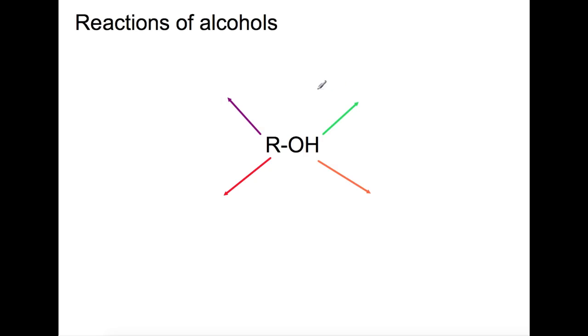Alcohols can be involved in lots of different reactions. One reaction that you will be used to is the oxidation of alcohols using acidified dichromate or Tollens or Fehlings to produce aldehydes, ketones, and carboxylic acids.